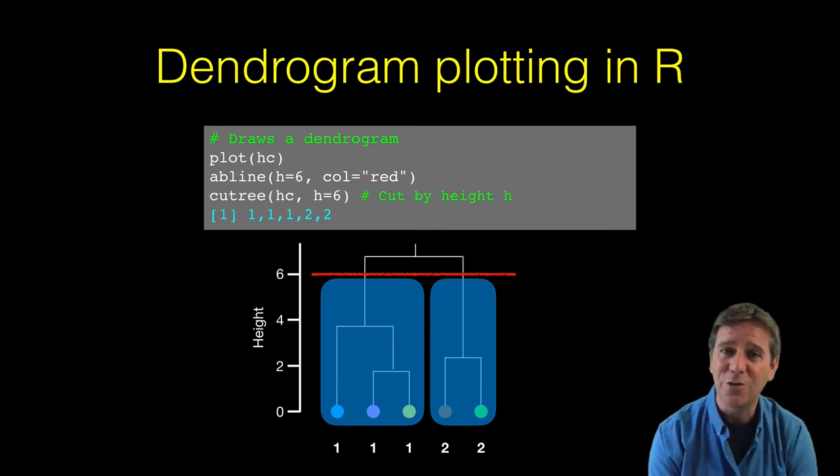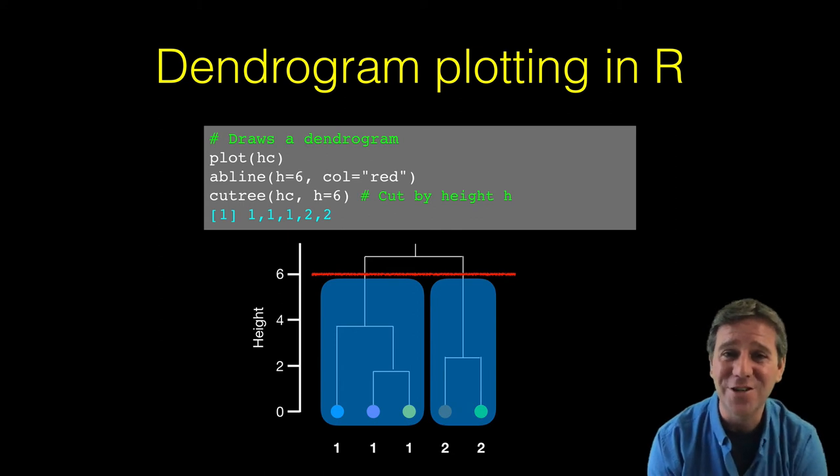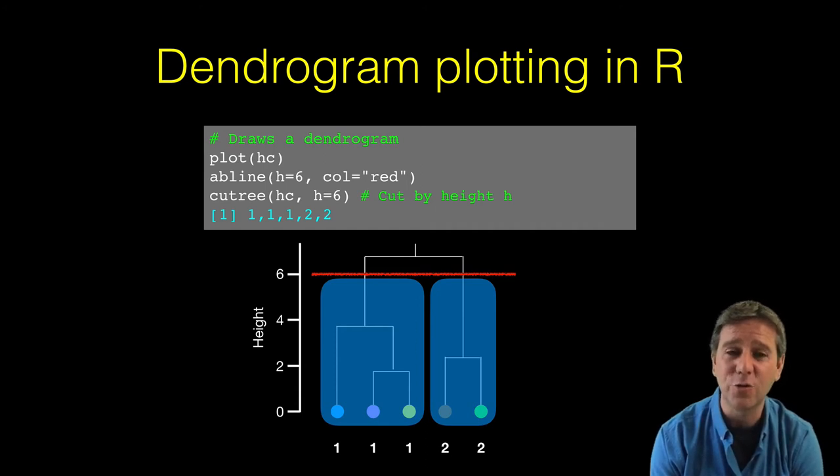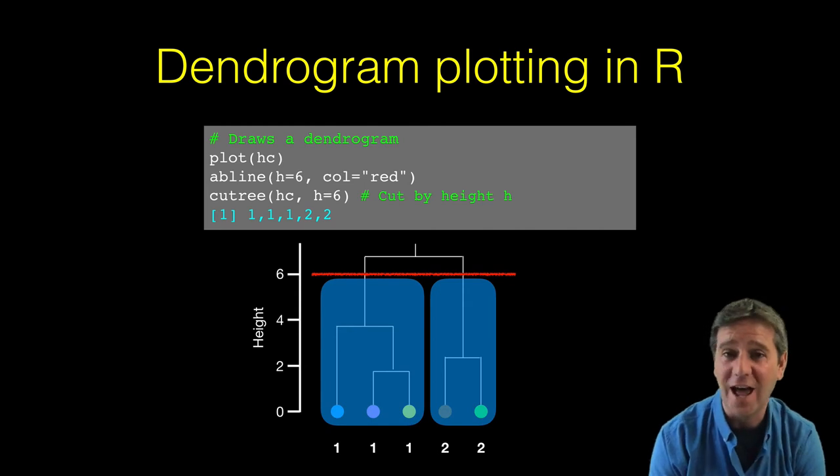We can actually do this cutting to find out what points are in each cluster with the cuttree function. This takes your hclust object and a height at which to cut. It returns a cluster membership vector with an element for each point in your original dataset, and the numbers in each element indicate which cluster it belongs to if you cut at that specified height.